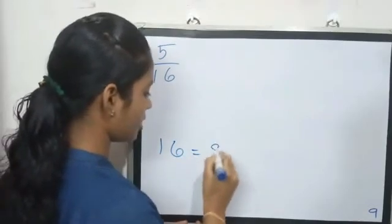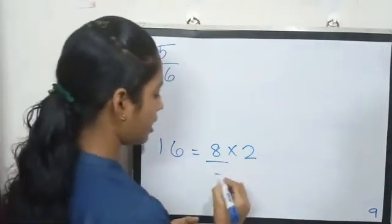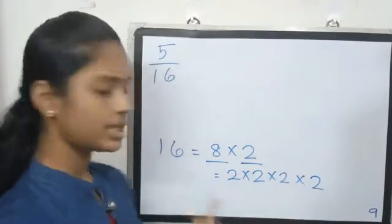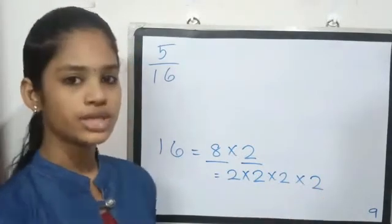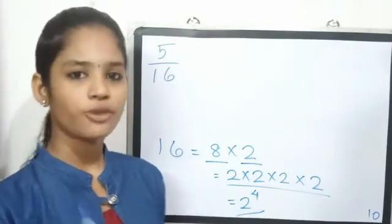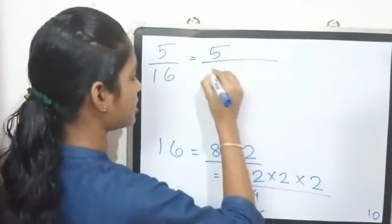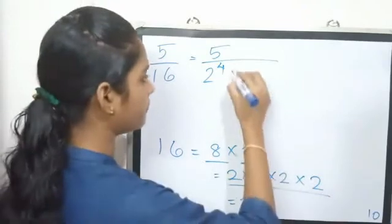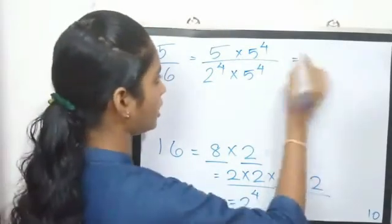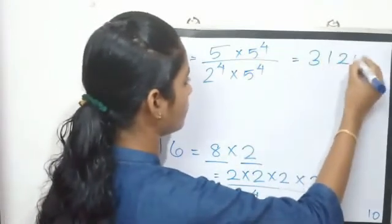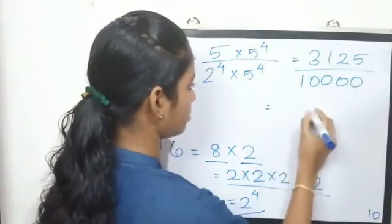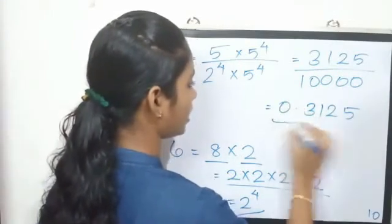Last question: 5 by 16. 16 is 8 into 2. 16 is 2 raised to 4. So the denominator is 2 raised to 4. We multiply the numerator and denominator by 5 raised to 4. 5 raised to 4 is 625. 5 by 16 is 2 raised to 4. 3125 divided by 5 raised to 4 into 2 raised to 4 is 10,000. Decimal: 0.3125.